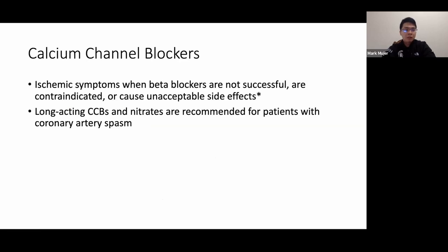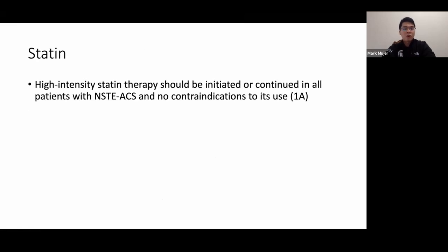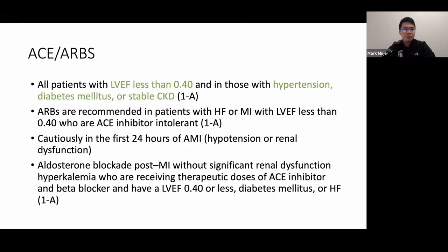Calcium channel blockers are indicated when ischemic symptoms are present and there are contraindications to beta blockers, or when beta blocker therapy is unsuccessful. Give high-intensity statin therapy to all patients. ACE inhibitors or ARBs are indicated for patients with an ejection fraction below 40%, or those with hypertension, diabetes, or stable chronic kidney disease.